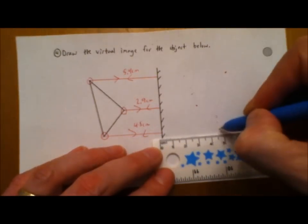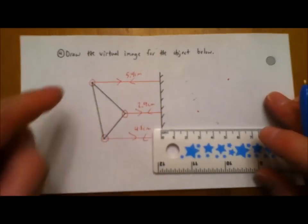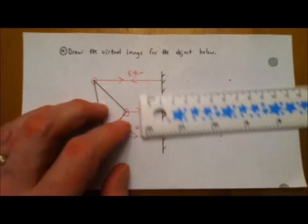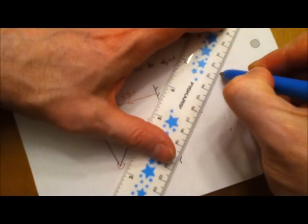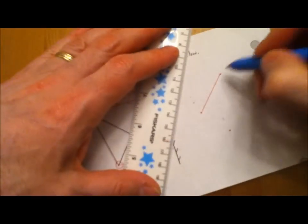So we've got three dots there that are the same distance as these significant points on the left hand side. Then what you do is you just connect those dots in the same manner that they're connected on the other side.